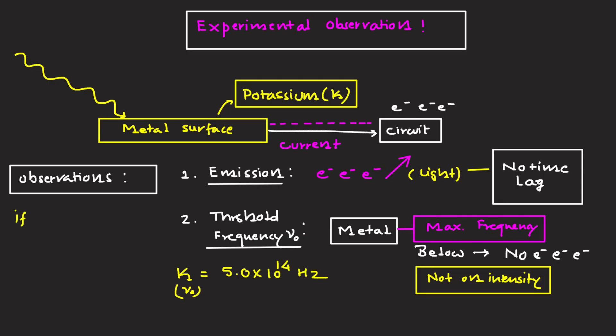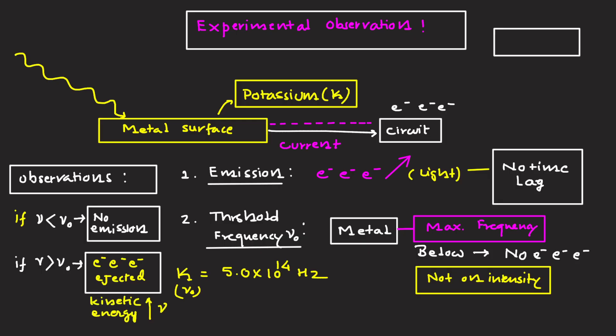Now let's talk about the effect of frequency. If nu is less than nu naught there will be no emission. If nu is more than nu naught, electrons are ejected with kinetic energy that increases with nu. Effect of intensity: increasing intensity increases the number of electrons ejected, which is photoelectric current, but does not increase the kinetic energy.